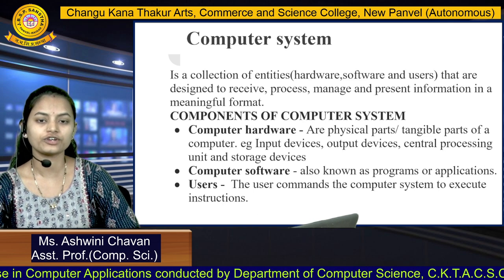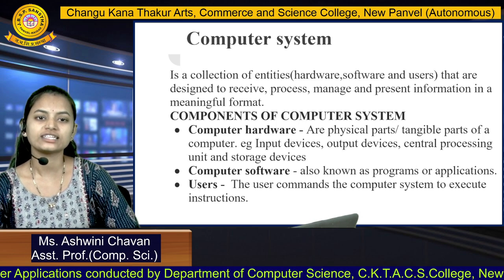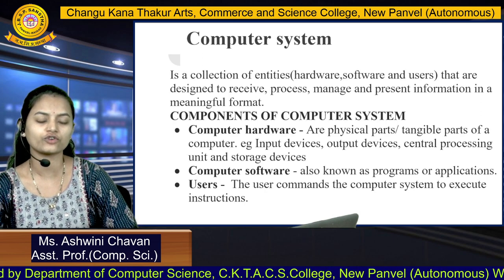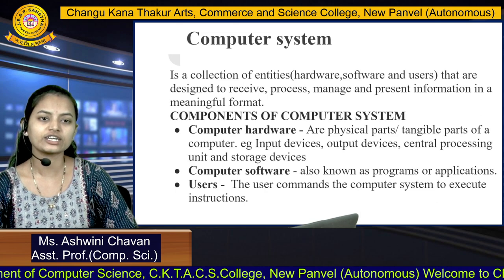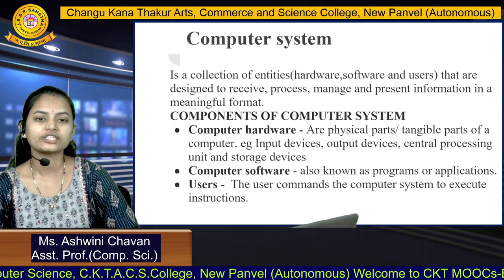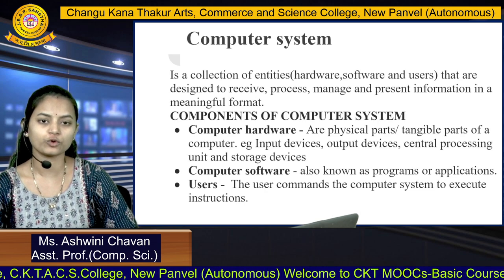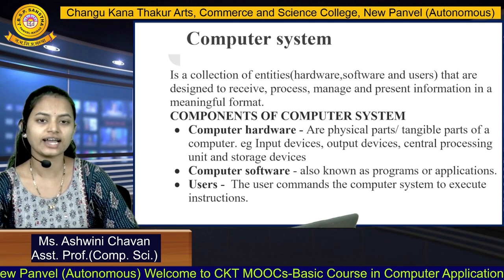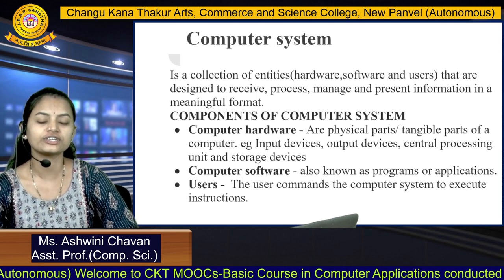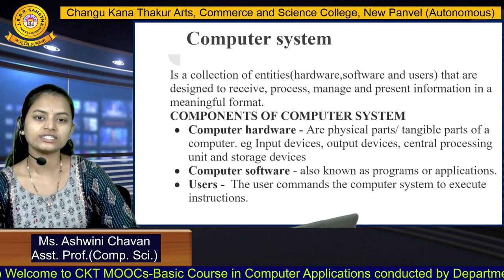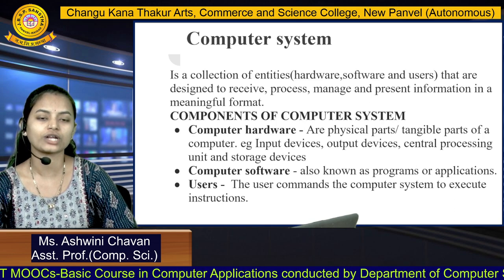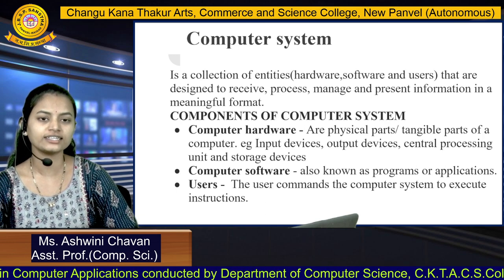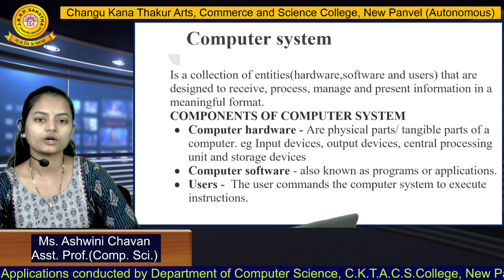The components are: first, computer hardware; then software; and the user. Hardware refers to the physical or tangible parts — things we can feel or touch. These include input devices like the keyboard and mouse, output devices like the monitor and speakers, the central processing unit, and storage devices. Software components are also known as programs or applications that run inside the computer system and are intangible — we cannot touch them.